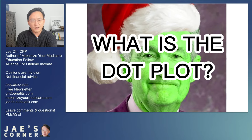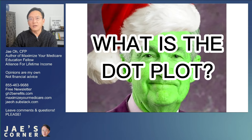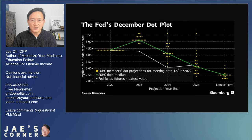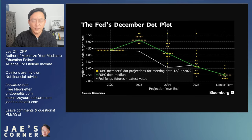So yesterday, the Federal Reserve increased interest rates by 50 basis points. And what I thought I would do is talk about the dot plot. What in the world is the dot plot? This was what consumed everyone after the announcement. Questions about what the dot plot was. Here it is — this is from Bloomberg. The question here was: for 2023, this concentration of dots represents what the voting members of the Federal Reserve thought the Fed funds rate was going to be next year. This was higher than expectation.